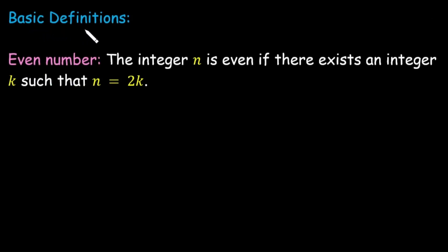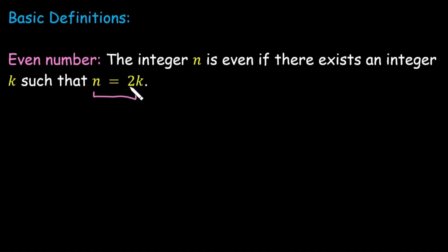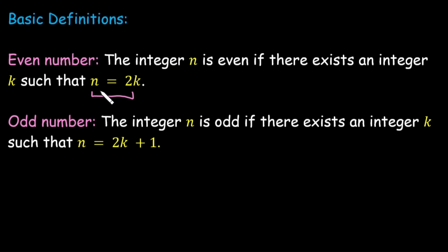Now we need a few basic definitions. The first definition is what do we mean by even number. Suppose n is an even integer — it means there exists an integer k such that n equals 2 times k. So any number that can be written as twice some integer is called even. And if the integer is written as twice some integer plus 1, that is called an odd number.